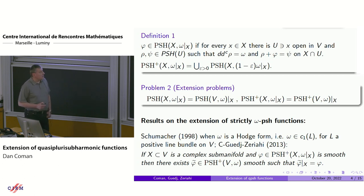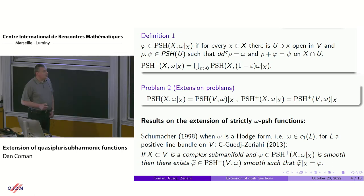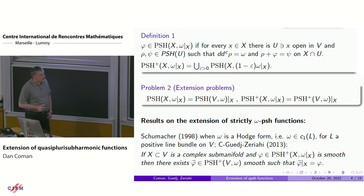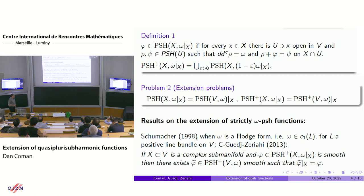So the extension problem is: suppose you are given such an object on X. Can you find an omega-plurisubharmonic function on V so that phi is the restriction of that function to X? One inclusion is obvious by restriction — global objects give you objects on X. One can ask the same question for the strictly omega-plurisubharmonic class: if you have a strictly plurisubharmonic function on X, is it possible to extend it to a strictly plurisubharmonic function on V?